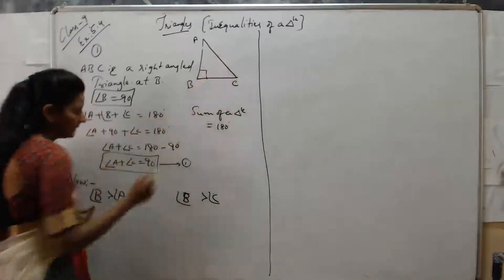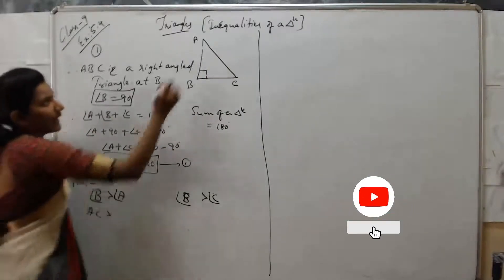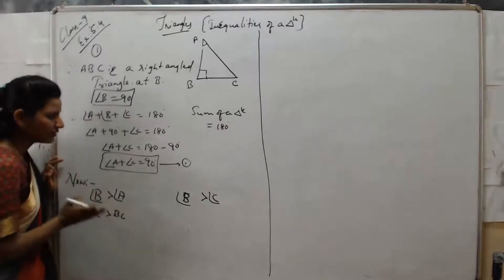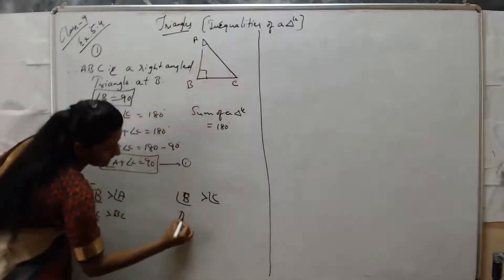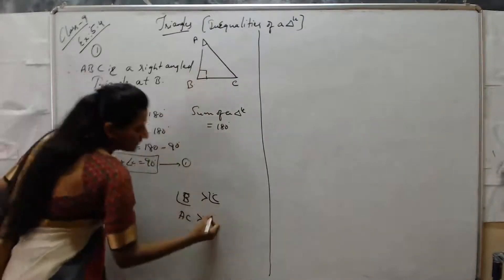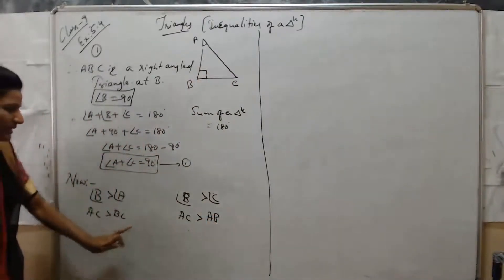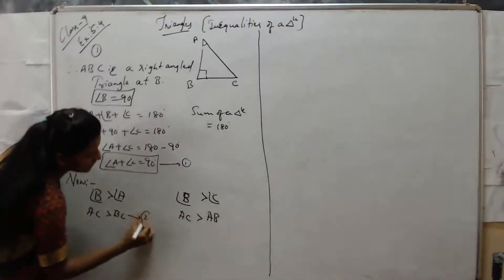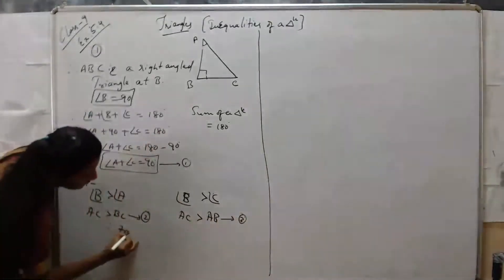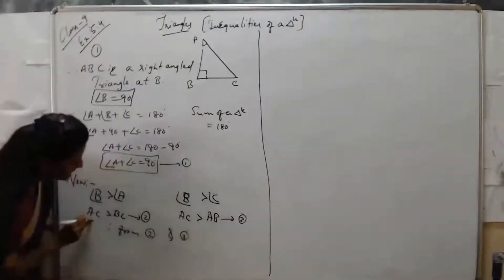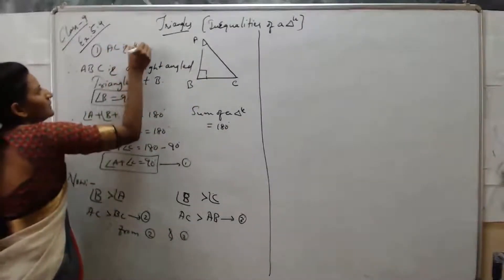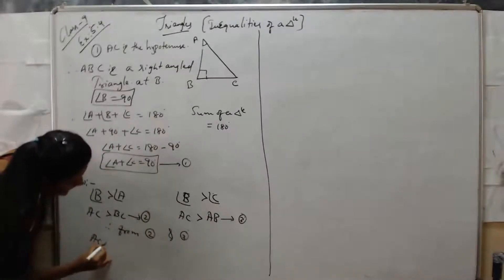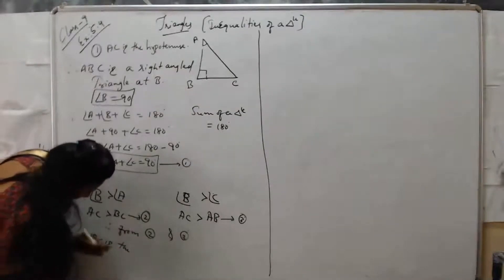Angle B — opposite side is AC. Angle A — opposite side is BC. Angle C — opposite side is AB. So AC is greater than BC, and AC is greater than AB. Therefore, from equations 1 and 2, AC is the hypotenuse.